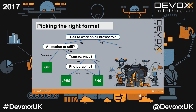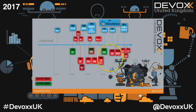So, how to pick the right image format? The first question is: does your image have to work on all browsers? If it has to work on all browsers, the first question is whether it is an animation. If it's animated, you have no choice but to use GIF. If it's not animated and has transparency, you must use PNG, because JPEG doesn't support it. The bulk of web images are still images without transparency — in that case, if it's a photographic image, JPEG is typically the best choice. If it's non-photographic, PNG might be better.